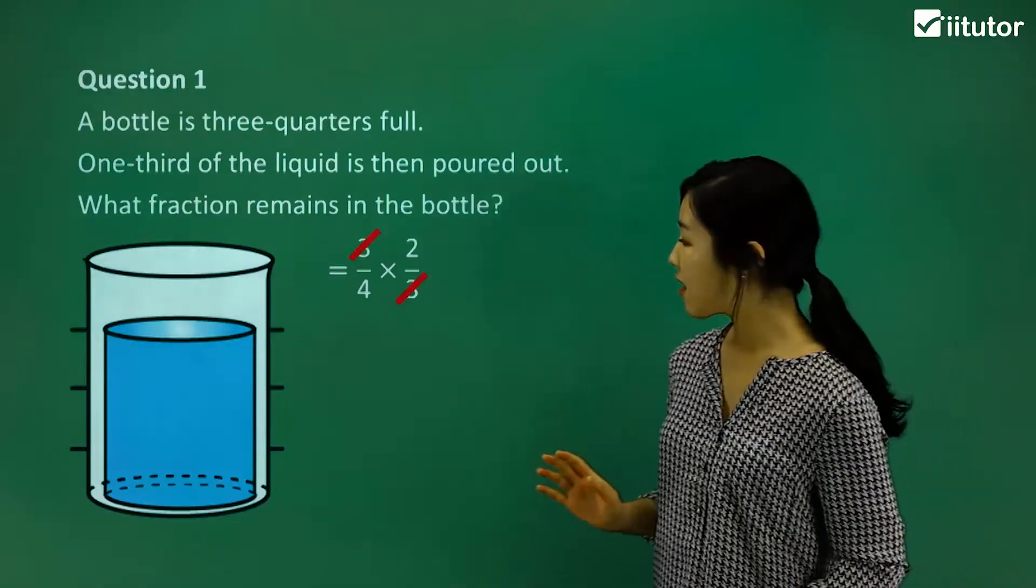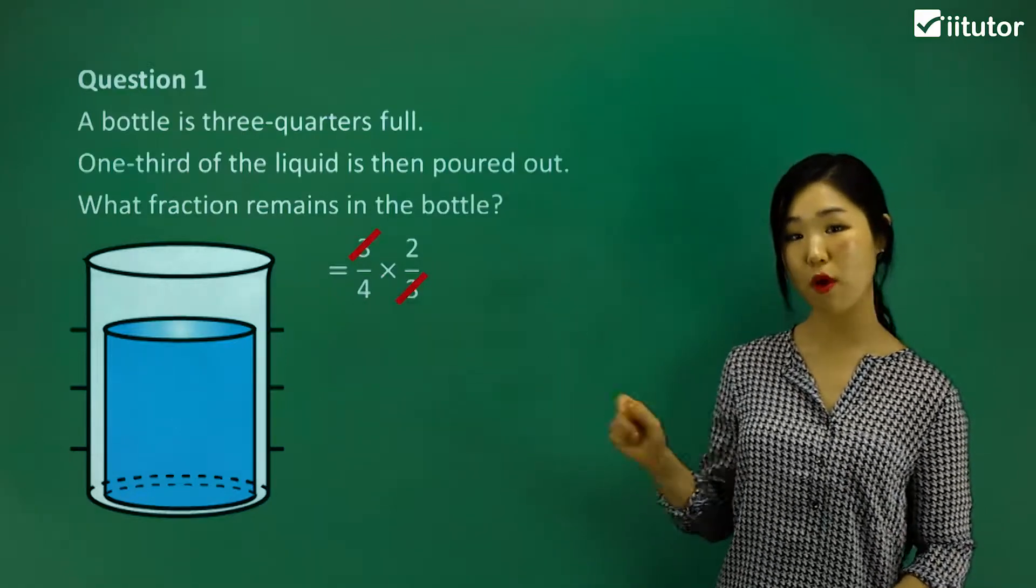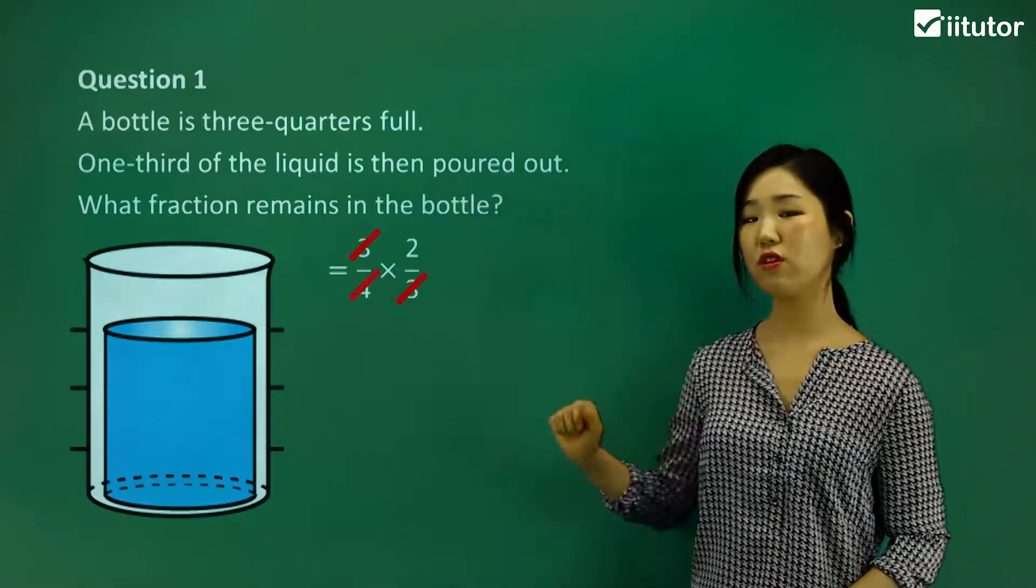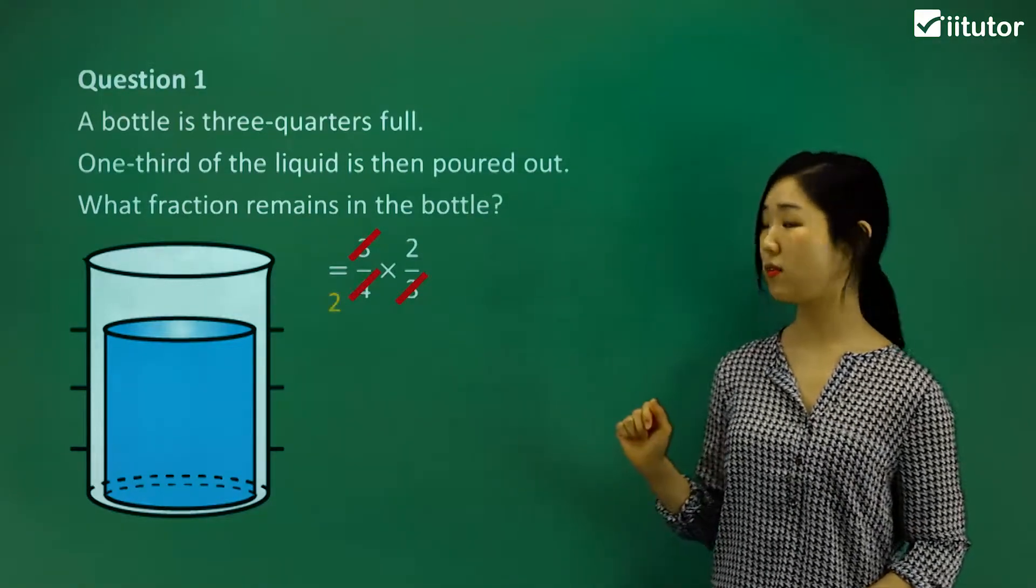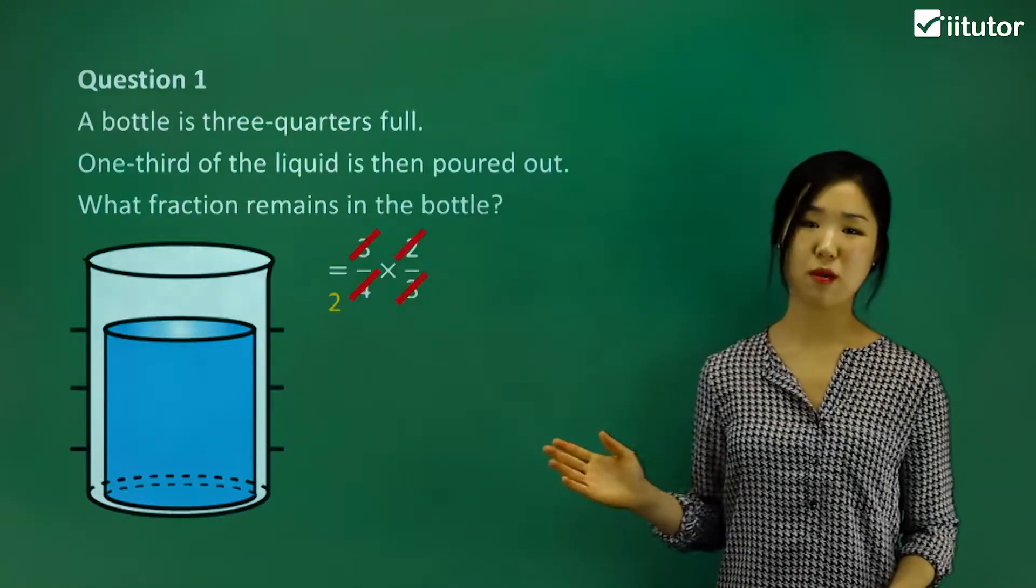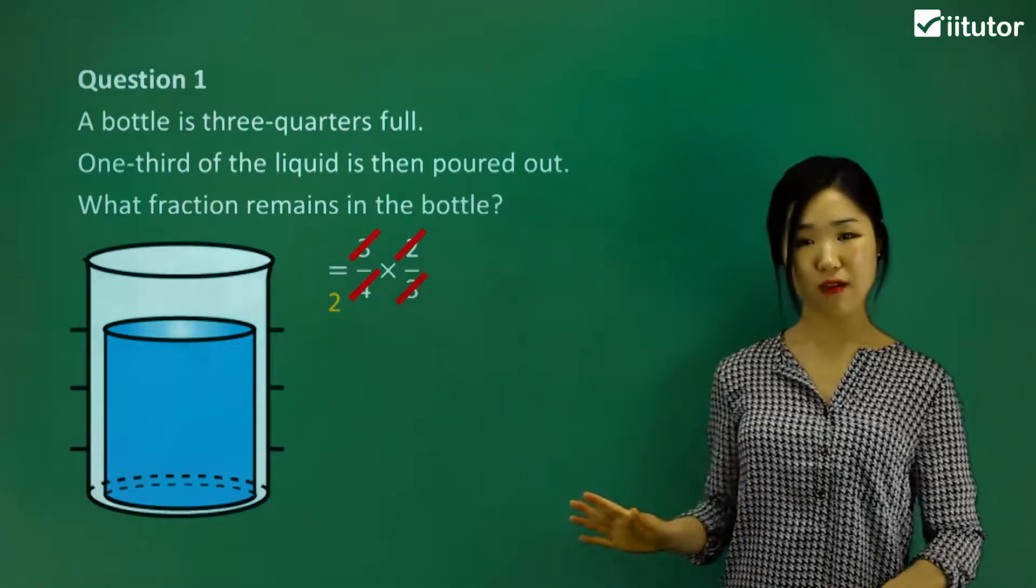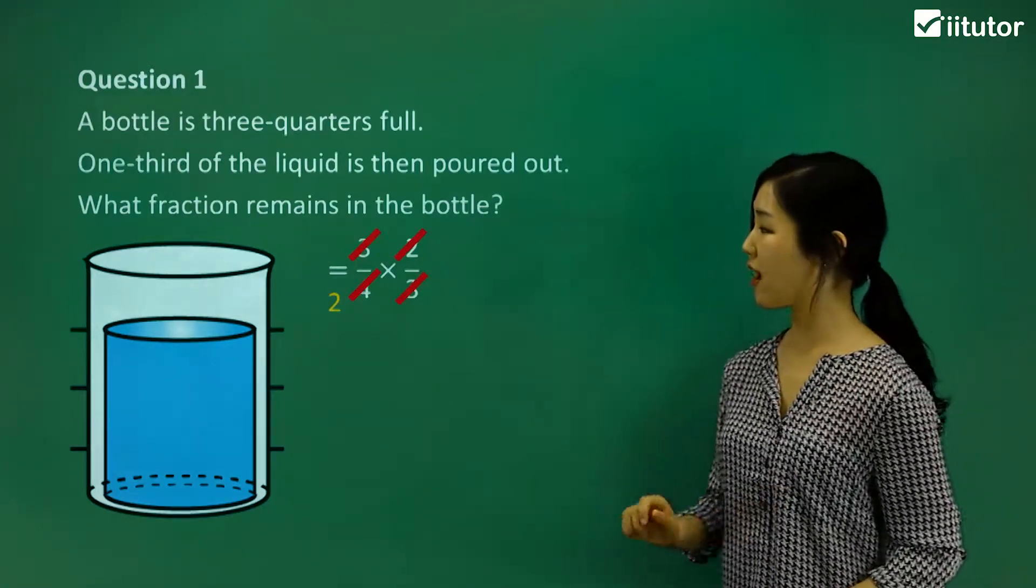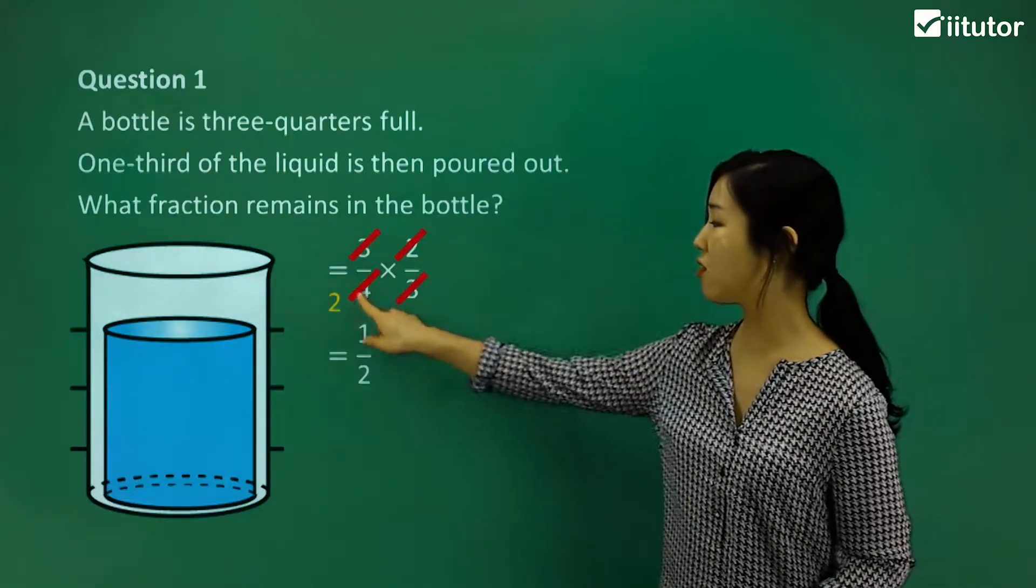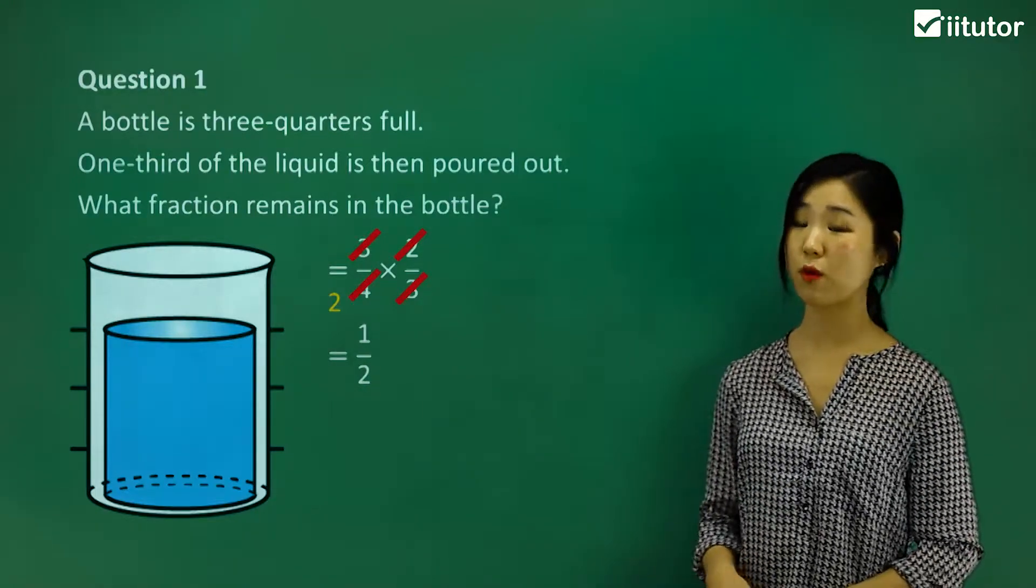I think we can go further because two and four also have common factors of two. They're both divisible by two. Let's cross out the four, and four divided by two is two, so the two stays. This one we'll cross out, and two divided by two is just one, so nothing remains on top. Now simplify the multiplication. One times one is just one on the numerator, and there's only two on the denominator. So half of the liquid in the bottle is left.